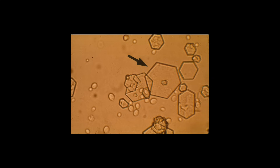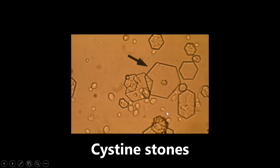These here are an example of cystine crystals or cystine stones — that is an example of nephrolithiasis. And the big giveaway here is the hexagonal shape. Really a perfect, easy association. You see something like this on the slide — hexagonal — you want to be thinking about cystine stones. Boom, go on to the next question.